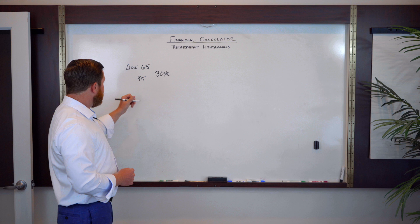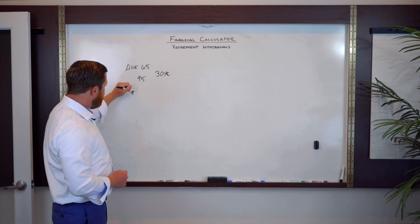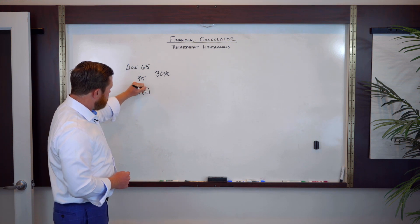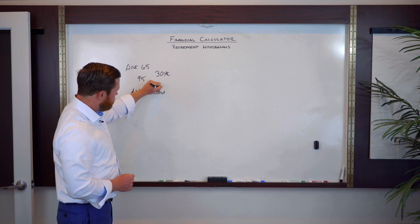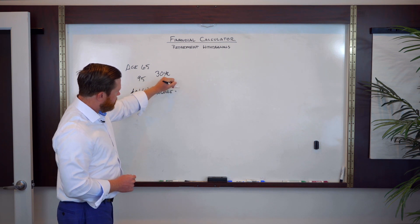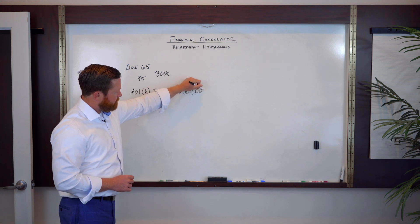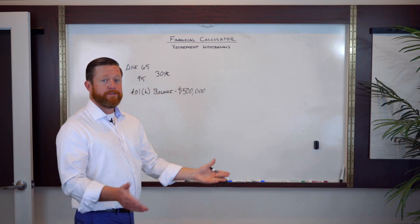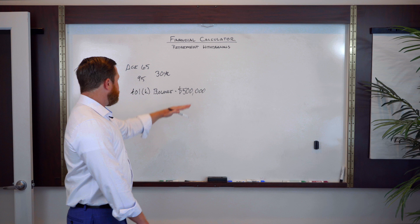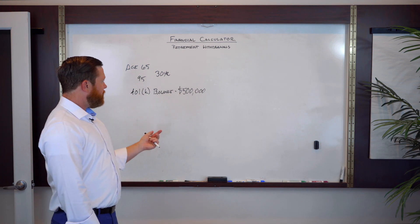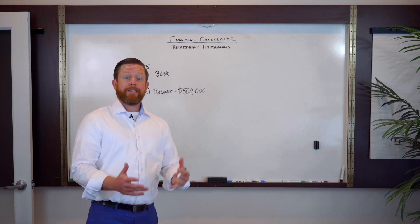In our example here, let's say that we have a 401k balance of $500,000. Okay, so not too big, not too small, kind of right in the middle. We've got $500,000 saved up. And that's what we want to make sure lasts.